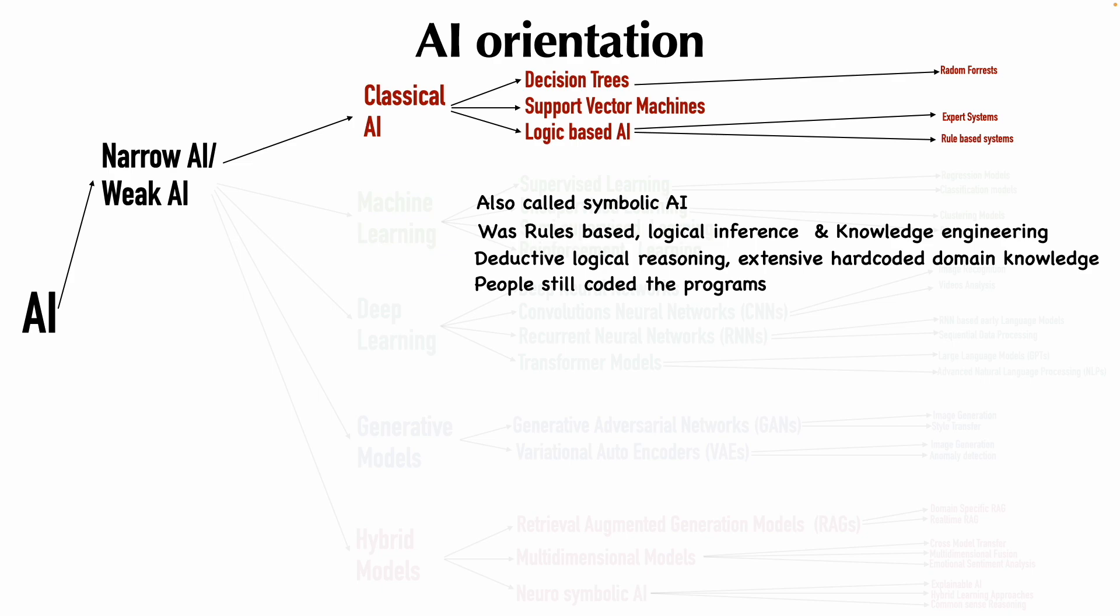So of course, there was a success that was seen during this era. There was a system which could play a checkers game, and then there was a logic theorist application which was mimicking human mathematical theorem proofs. It was basically able to prove certain mathematical theorems as if humans were giving proof to those particular theorems. And if you are wondering which timeline is this, it is basically around 1950s to 1980s.